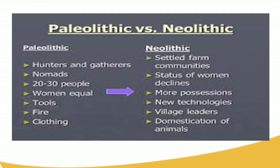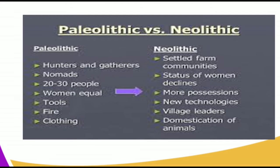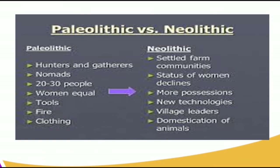In the Paleolithic, people were hunters and gatherers. In the Neolithic, man settled in farm communities — known as a sedentary lifestyle — whereas before man was a nomad. In the Paleolithic, groups of 20 to 30 people lived together and women were equal, but in the Neolithic the status of women declined and man became the head.